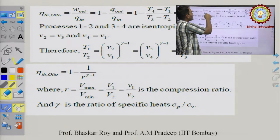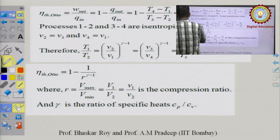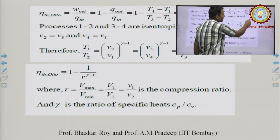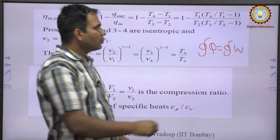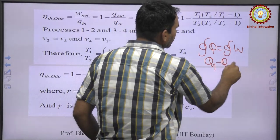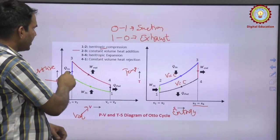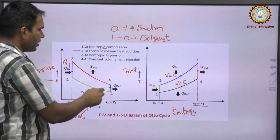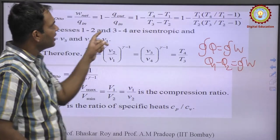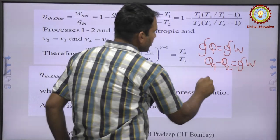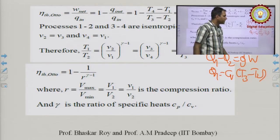The efficiency of the Otto cycle is η = W_net / Q_in. For a cycle, the net work equals Q₁ minus Q₂, where Q₁ is heat supplied and Q₂ is heat ejected. Since process 2→3 is a constant-volume process, Q₁ = C_v(T₃ − T₂).